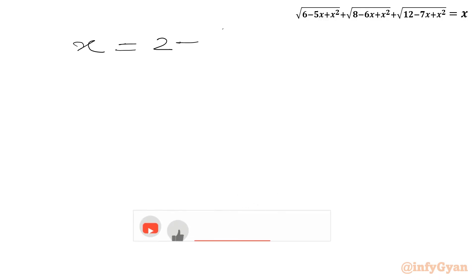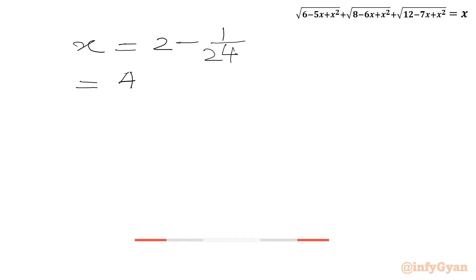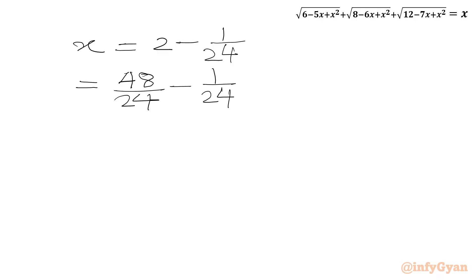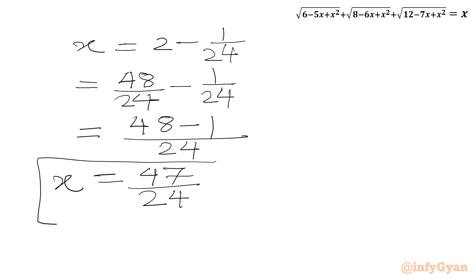Since x = 2 − m, we get x = 2 − 1/24 = 48/24 − 1/24 = 47/24. So our final answer is x = 47/24, which is indeed less than 2, satisfying our domain condition.